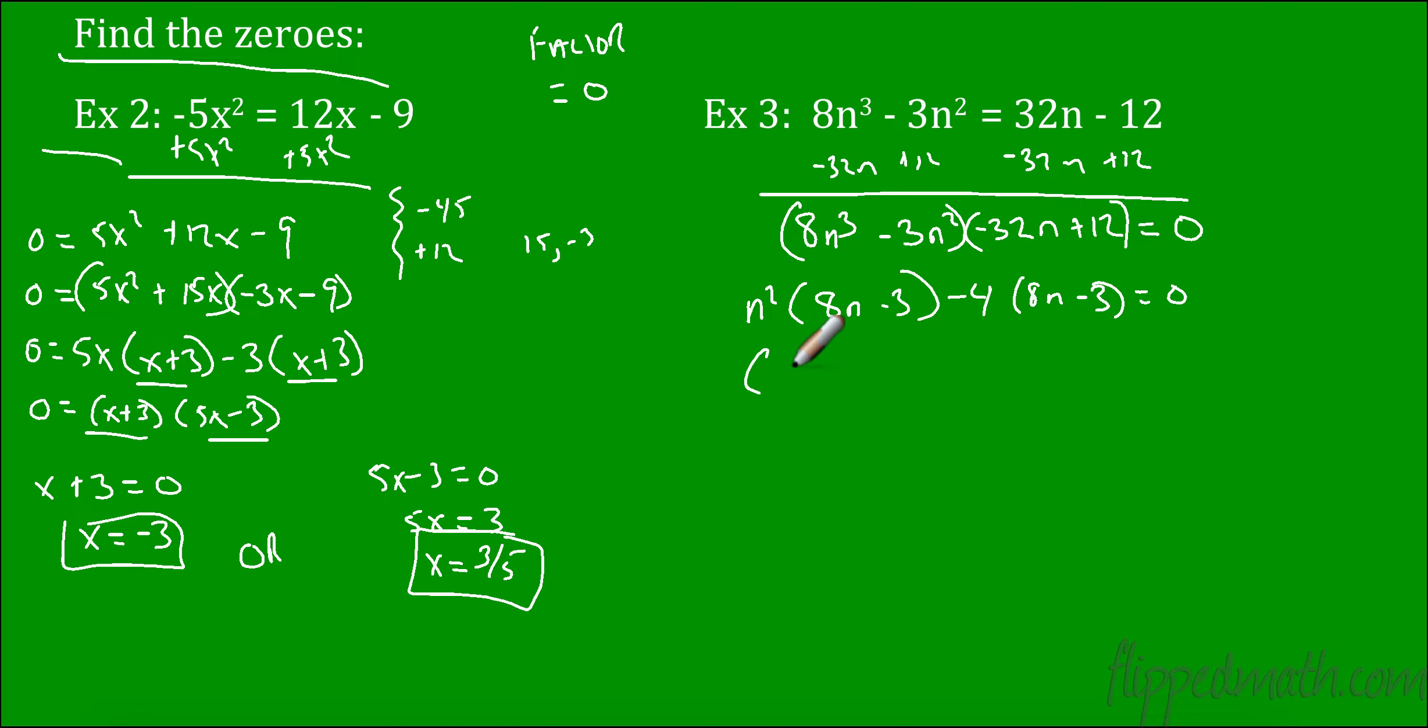I have 8n minus 3 is one of my factors, and then I have n squared minus 4. What do you notice about n squared minus 4? Difference of squares. So now this is n minus 2 and n plus 2. Hopefully, if you haven't been in a mastery-based classroom before, now you're starting to see why it's so important. If you didn't learn how to factor in sections 1 through 3, you're going to be hurting today.